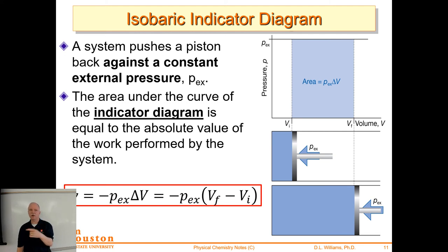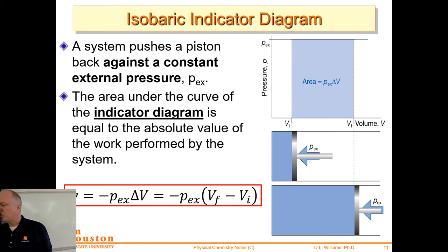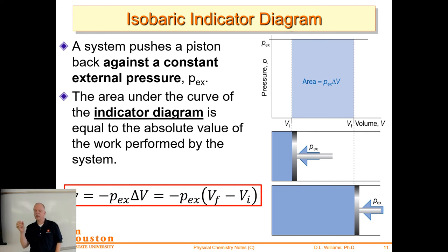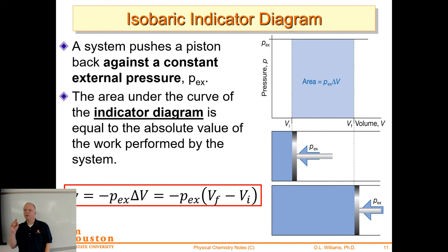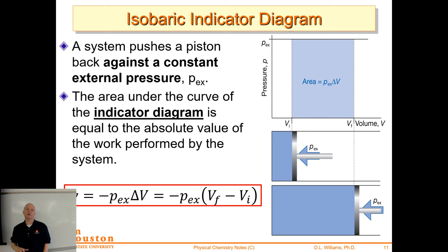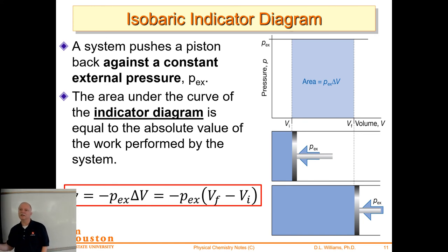The system is pushing a piston against a constant external pressure — this is the indicator diagram. The expansion work formula is: W = −P_external × ΔV = −P_external × (V_final − V_initial). That minus sign in front of P_external makes the work term negative, because from the perspective of the system, if the system does work on the surroundings, its capacity to do work has decreased — energy has flowed out of the system in the form of work.